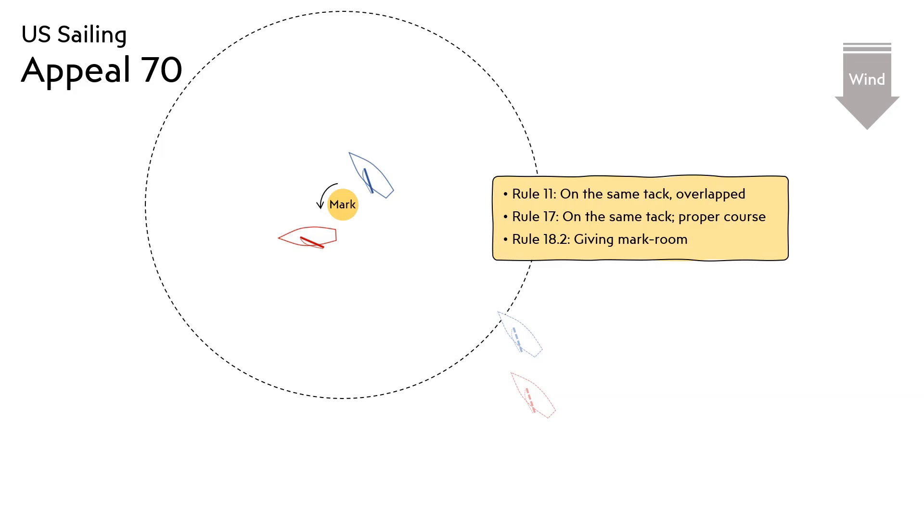The appeals committee ruled that the red boat's proper course would have been to sail above close-hauled in order to round the mark. They found no evidence that the red boat sailed above their proper course. The blue boat's appeal was denied, and the blue boat remained disqualified for breaking rules 11 and 18.2b.